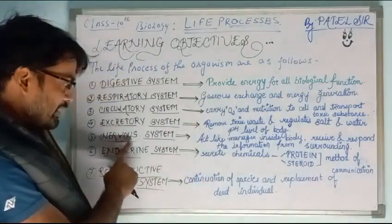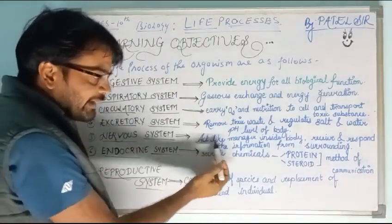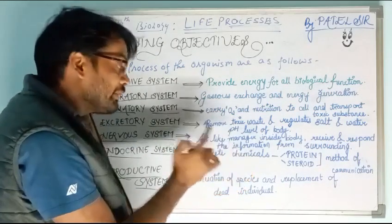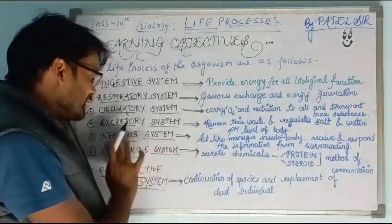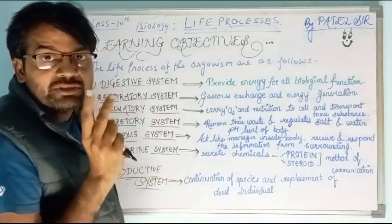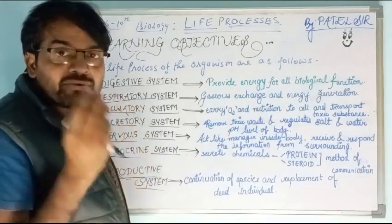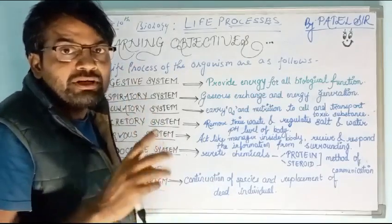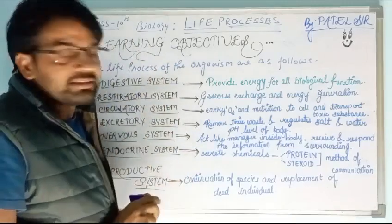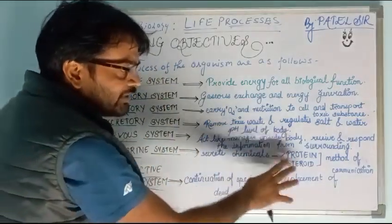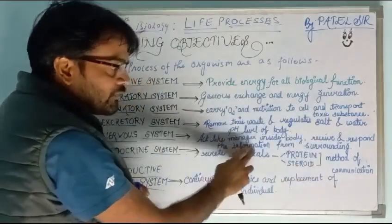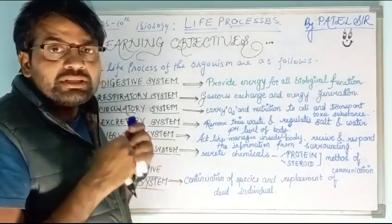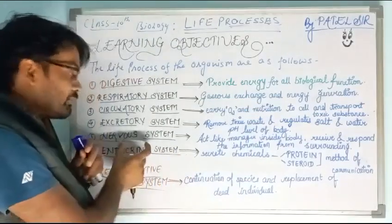The nervous system acts like a manager for the body. It receives and responds to information from the surroundings. It includes the central nervous system (CNS) — brain and spinal cord — and the peripheral nervous system (PNS).